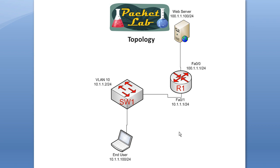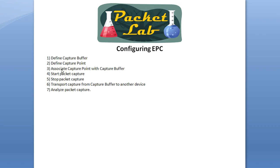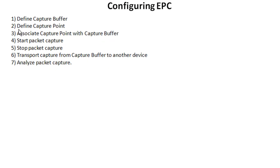Here's a quick look at the topology. We've got an end user trying to get to a web server and having problems. The infrastructure has him connected to a switch, then into the router on port FA0/1, with the web server off of FA0/0. This might be a remote access site where you don't have the ability to get a sniffer in or run Wireshark. So we're going to sniff on R1 and capture packets going in both directions on FA0/1. You're going to define the capture buffer, define a capture point, and associate those together.